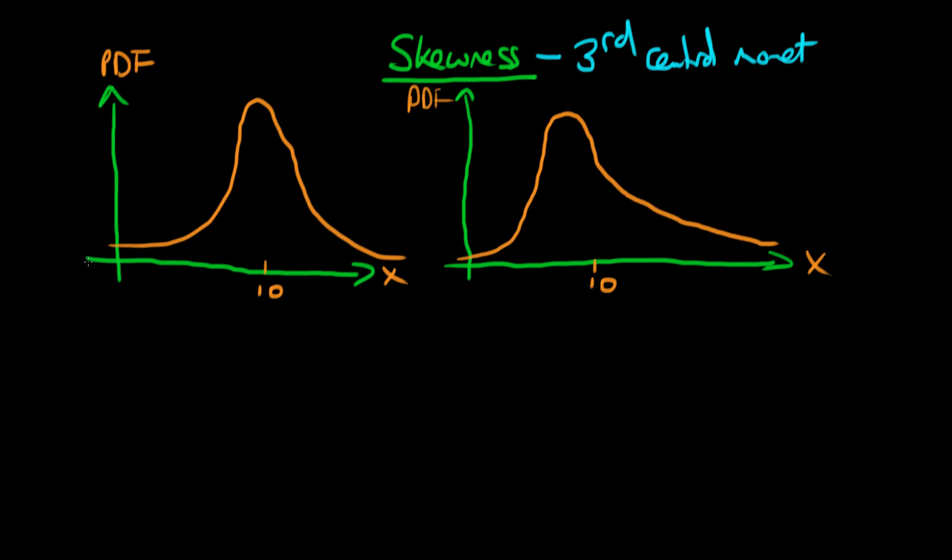I've drawn two particular PDFs for two different random variables. The first random variable is centered and pretty much symmetric, with a mean of 10.